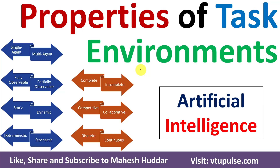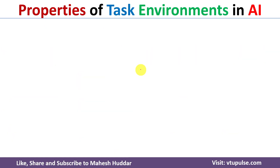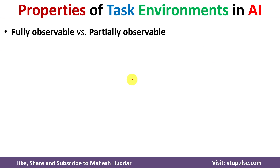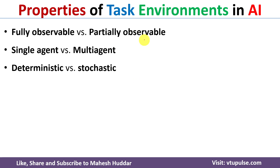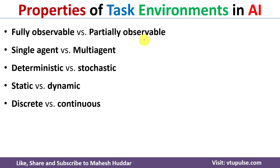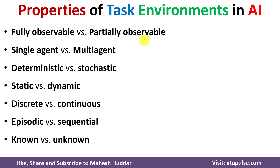Welcome back. In this video I will discuss properties of task environments in artificial intelligence with the help of simple examples. There are mainly seven properties of task environments in AI: fully observable versus partially observable, single agent versus multi-agent, deterministic versus stochastic, static versus dynamic, discrete versus continuous, episodic versus sequential, and known versus unknown environments.